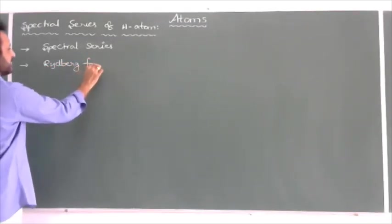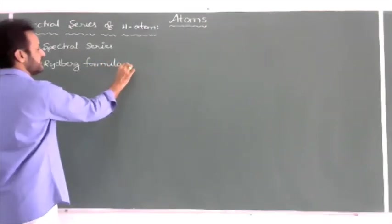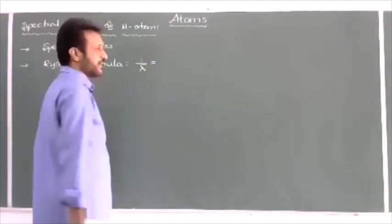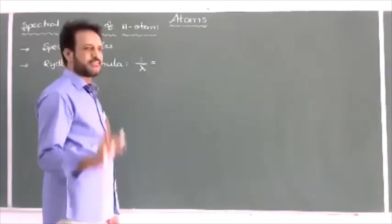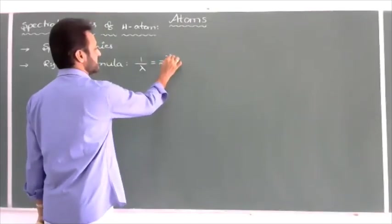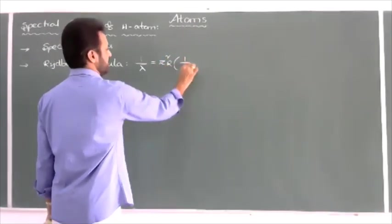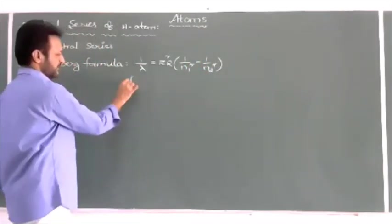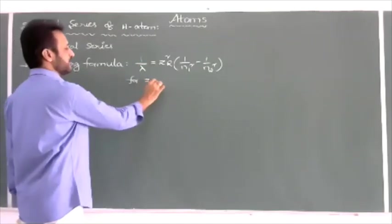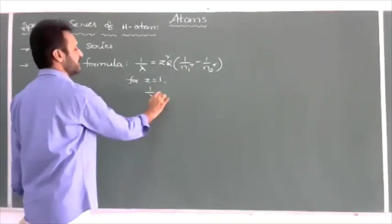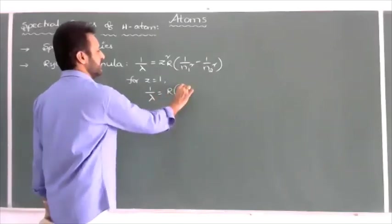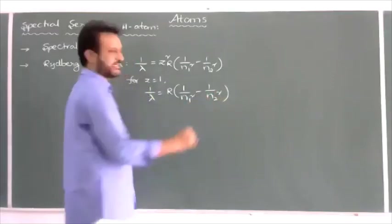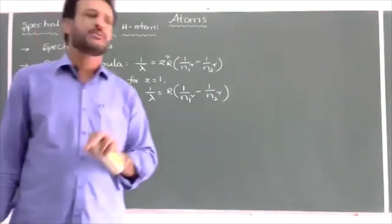The Rydberg formula for understanding spectral series is: 1/λ = Z² × R × (1/n₁² − 1/n₂²). If the given atom is hydrogen, Z = 1, so: 1/λ = R × (1/n₁² − 1/n₂²). This is called the Rydberg formula for the hydrogen atom.